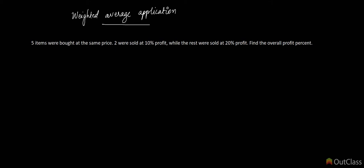The number line for weighted average calculation has application in this profit and loss chapter. Let's look at an example question. Five items were bought at the same price. Two were sold at 10% profit while the rest were sold at 20% profit. Find the overall profit percent.